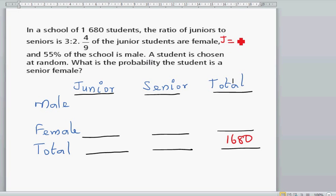The ratio of seniors to juniors is 3 to 2. So for every 5 students, there are 3 juniors and 2 seniors. If you put that in a calculator, that's going to be 1,008. Let me show that on the calculator.